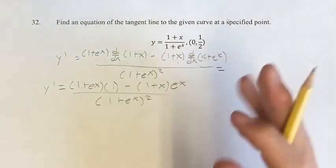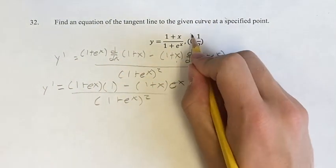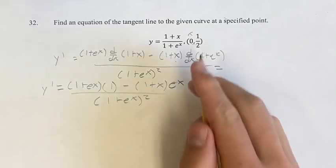Normally, you'd want to clean this up a little bit more. But since we're just going to be plugging in x equals 0, because we're looking for the tangent line at this point, then we don't have to worry about that.